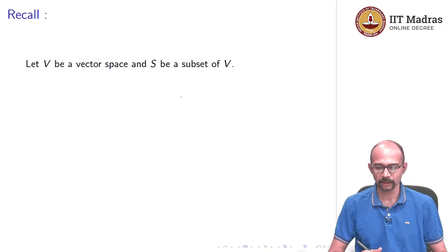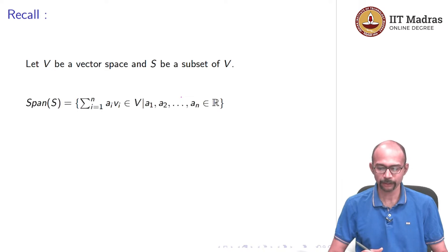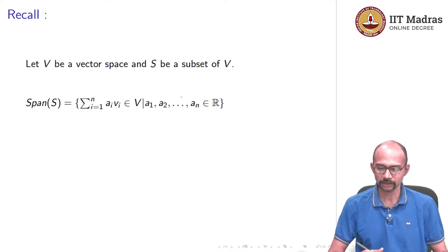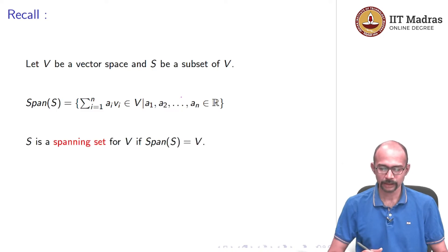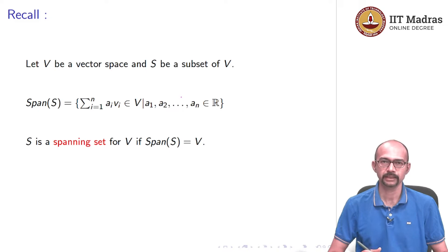Just to recall: suppose V is a vector space and S is a subset of V. We defined the span of S to be the set of linear combinations of vectors in V. You take summation a_i v_i where a_i are real numbers and v_i's are vectors in S. S is said to be a spanning set for V if the span of S is V, which means that the set of linear combinations exhausts V.